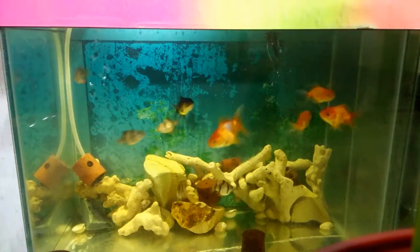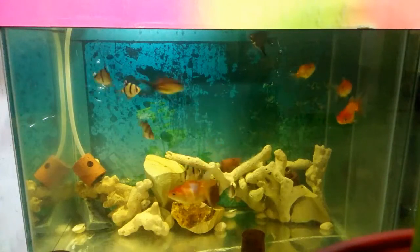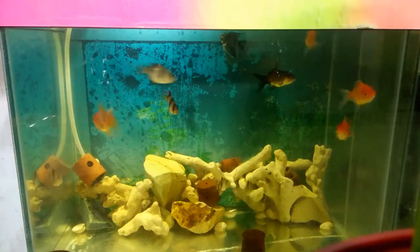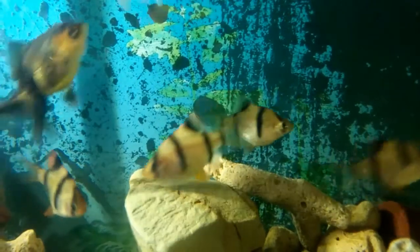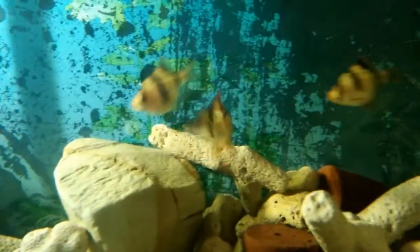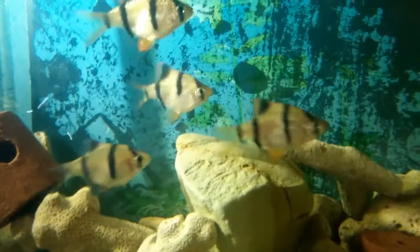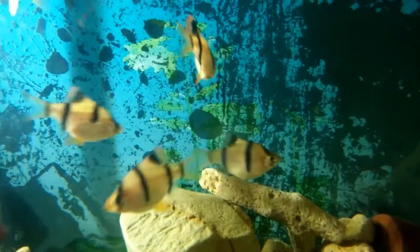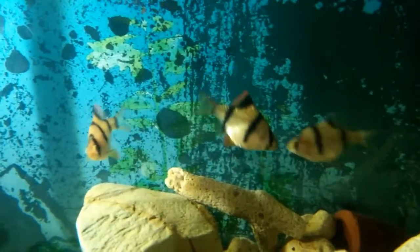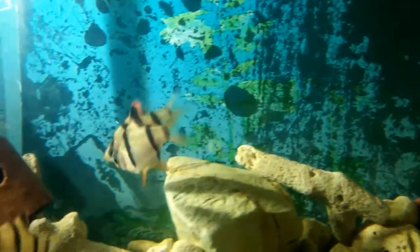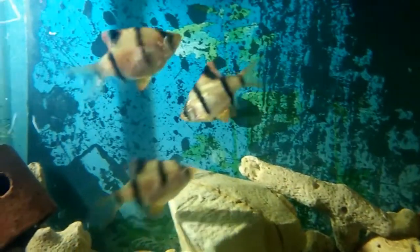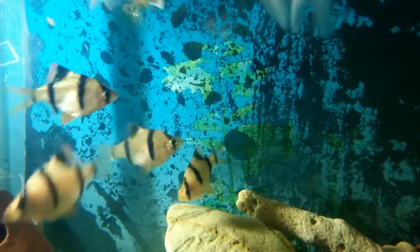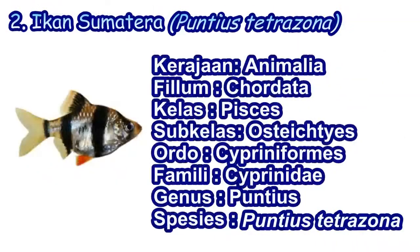Ikan ini senang mengganggu ikan yang lain dan berenangnya sangat cepat dan tangkas dibandingkan ikan-ikan yang lain. Ciri-ciri ikan sumatera: ikan sumatera ini bisa bertahan hidup hingga 6 tahun dengan ukuran 5-7 cm. Ikan sumatera ini juga memiliki tubuh yang bulat pipih dan cukup tinggi, serta sisi tubuhnya ada 4 garis vertikal warna hitam: yang pertama di sepanjang mata, di belakang sirip dada, belakang punggung, dan dekat ekor.